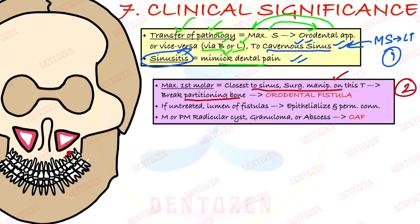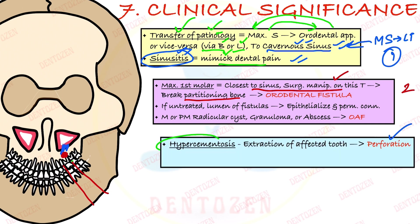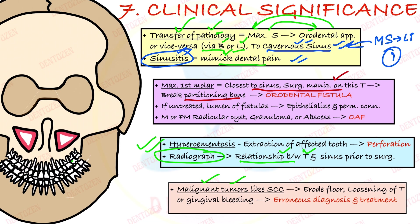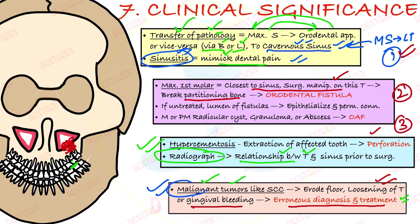Third point: there can be hypercementosis of the maxillary first molars — excessive cementum deposition on their roots. When trying to extract such a tooth without knowing about the hypercementosis, it can cause fracture of the bone close to the sinus, leading to perforation. Therefore, a radiograph should always be taken before extracting any maxillary posterior teeth to assess the relationship between the teeth and the sinus floor. Fourth point: if there is a malignant tumor of the sinus, proliferation of lining epithelial cells can invade the jaws, causing loosening of teeth and gingival bleeding, leading to erroneous diagnosis — the problem appearing dental when the actual source is sinus malignancy.